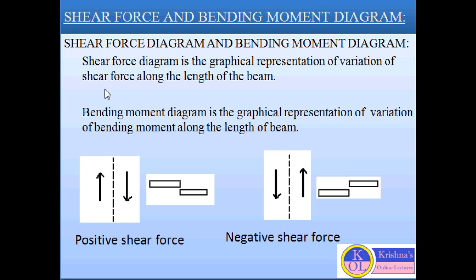The shear force diagram is the graphical representation of variation of shear force along the length of the beam. The ordinate of the shear force diagram at any section gives the value of shear force at that section due to the fixed load position on the beam. Similarly, the bending moment diagram is the graphical representation of variation of bending moment along the length of the beam, and the ordinate at any section gives the value of bending moment at that section.